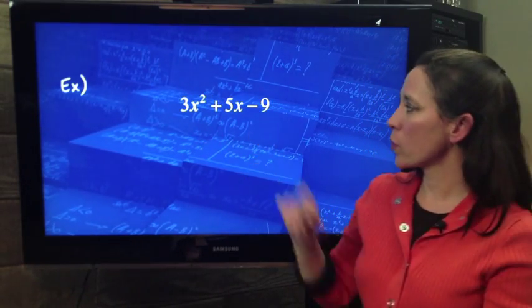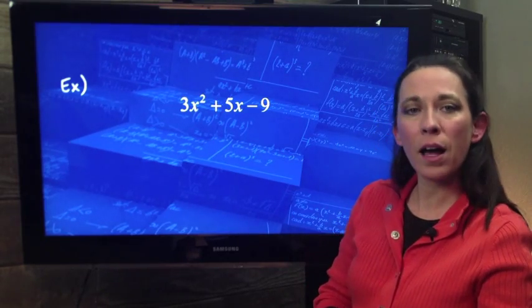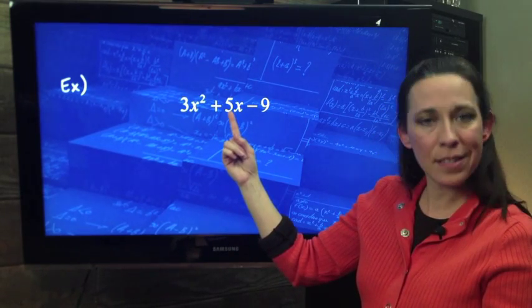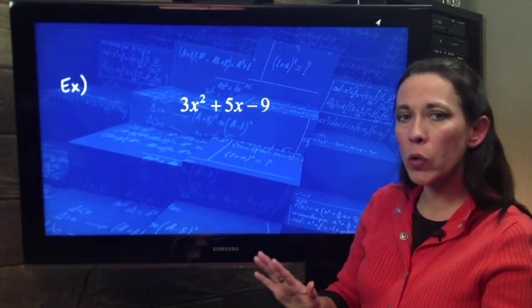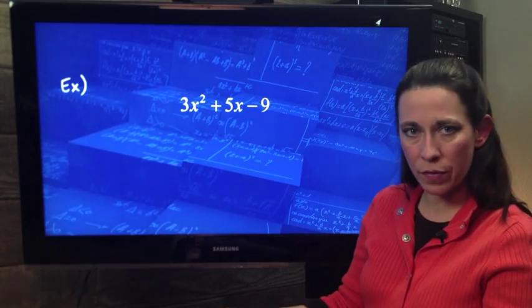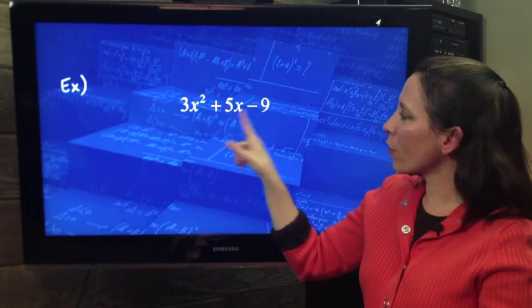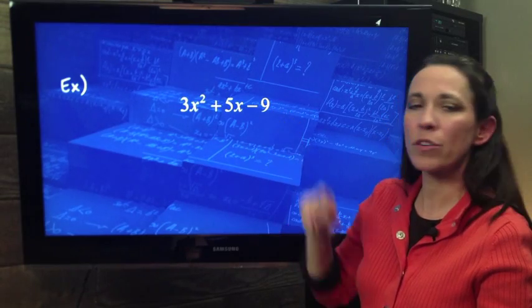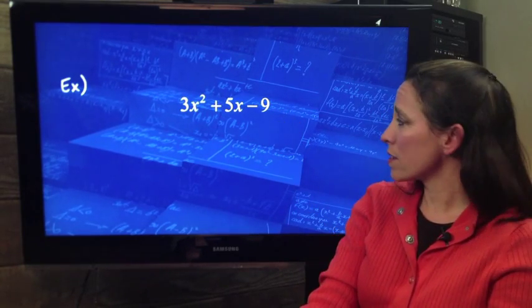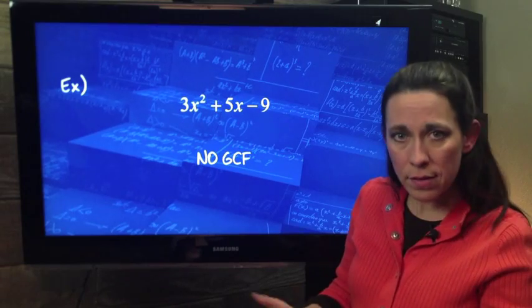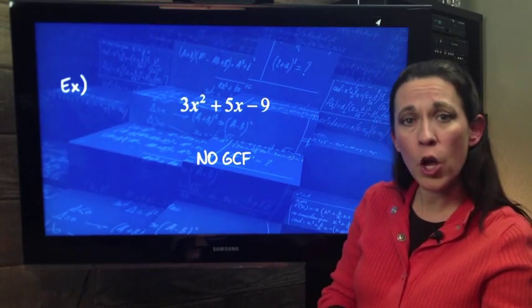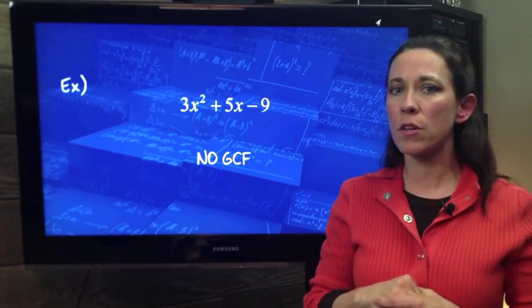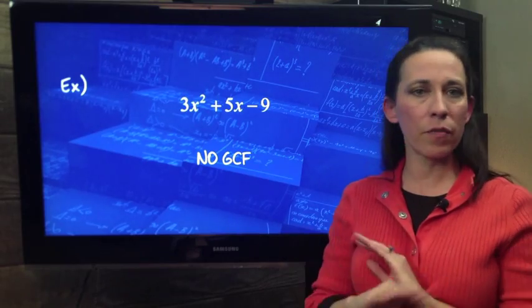Also, here's another example, 3X squared plus 5X minus 9. Well, 3 and 9 have a common factor of 3, but the 5 doesn't. Remember, it's all or nothing. They all have the same factor, or there's no common factor. So there's no numerical common factor. Also, the first term has an X in it, the second term has an X in it, but the third term does not. Therefore, this example has no GCF. And that's okay. Sometimes there's a GCF, sometimes there's not.